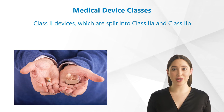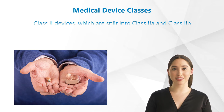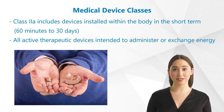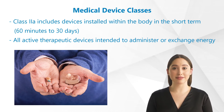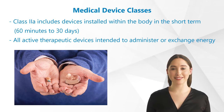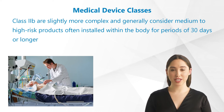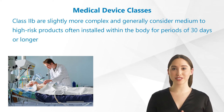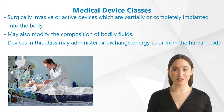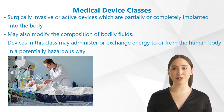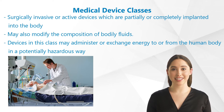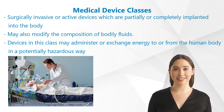Class 2 devices are split into Class 2A and Class 2B. Class 2A includes devices installed within the body in the short term, typically between 60 minutes and 30 days, and all active therapeutic devices intended to administer or exchange energy. Examples are hearing aids, blood transfusion tubes, and catheters. Class 2B are slightly more complex, generally considered medium to high-risk, often installed within the body for 30 days or longer. This class refers to most surgically invasive or active devices, partially or completely implanted into the body, which may also modify the composition of bodily fluids, or administer or exchange energy in a potentially hazardous way, taking account of the nature, density, and site of application of the energy. Examples include ventilators, infusion pumps, or intensive care monitoring equipment.